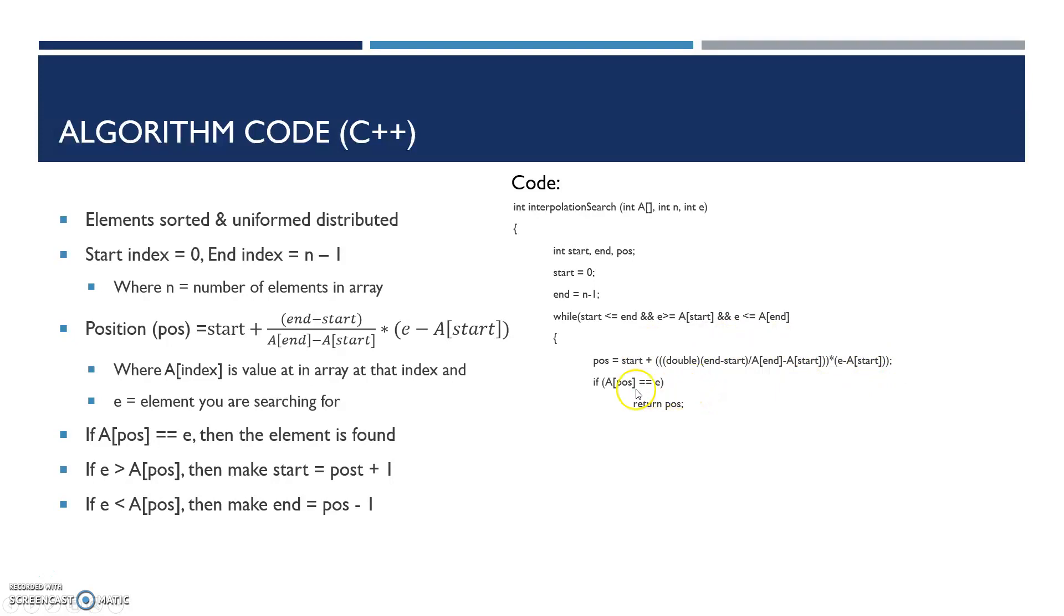For our first case, if A[position] equals e, which is the element you're looking for, just return that index and you're done searching. But if it's greater than, you add 1 to your start variable. Else, you subtract 1 from your end variable.